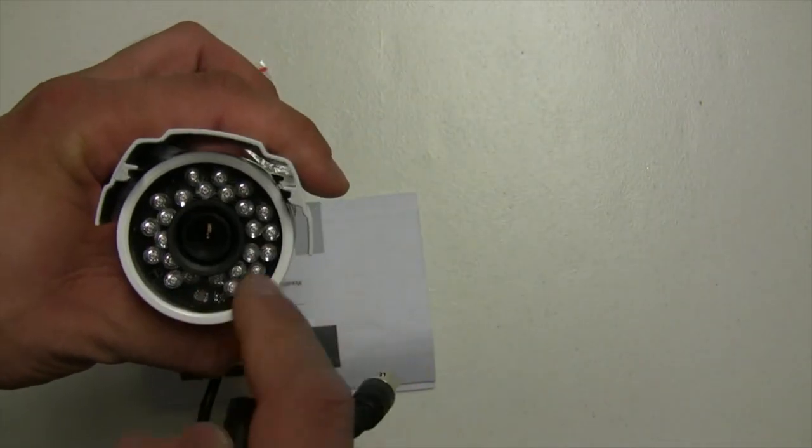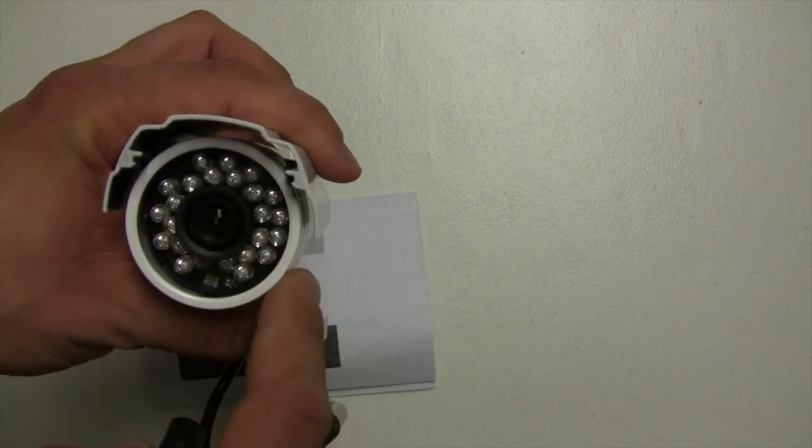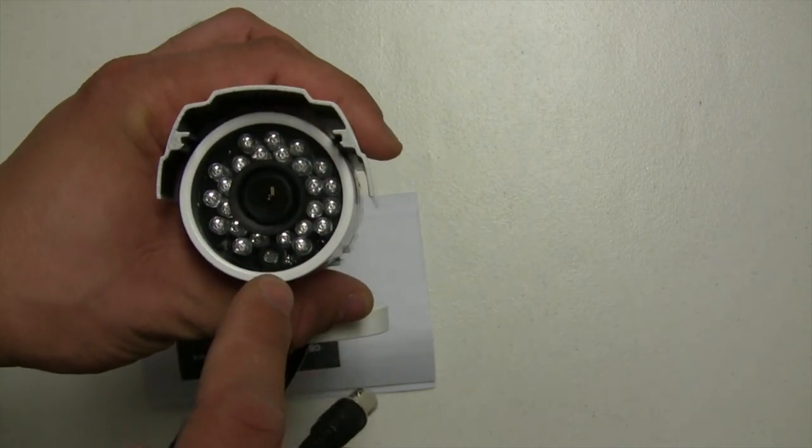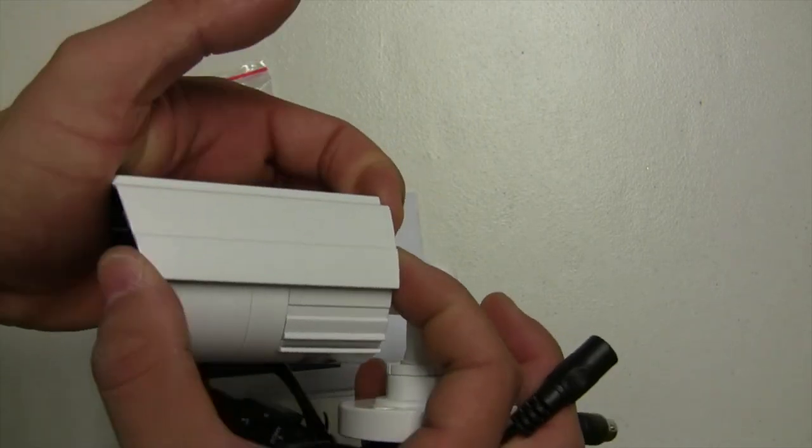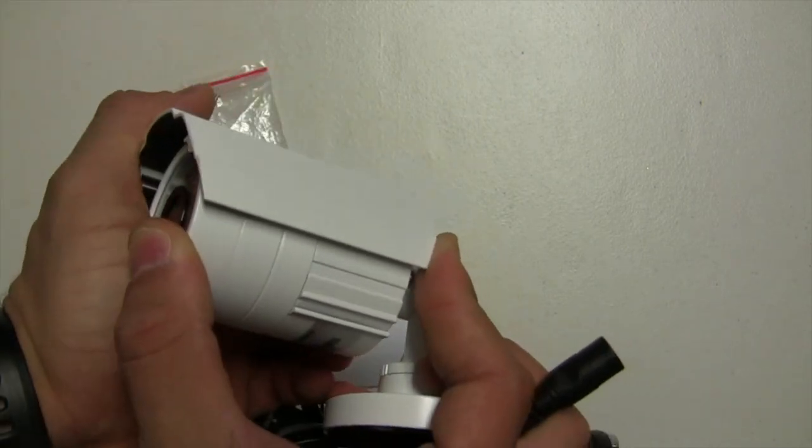At the front of the camera you can find the IR lights and the sensor right here. This visor you can move it back and forth.